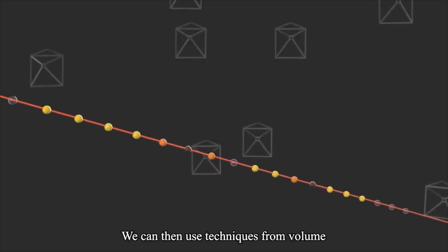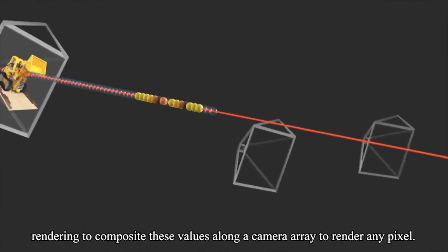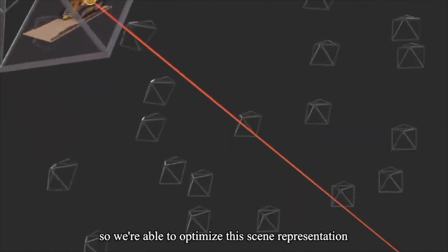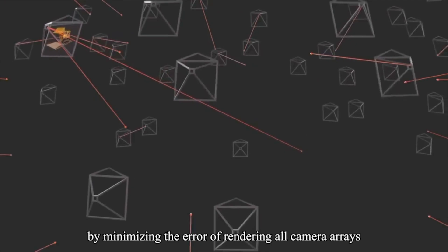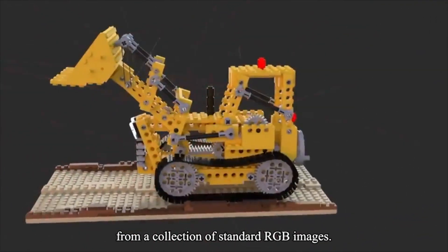We can then use techniques from volume rendering to composite these values along a camera array to render any pixel. This rendering is fully differentiable, so we're able to optimize this scene representation by minimizing the error of rendering all camera arrays from a collection of standard RGB images.